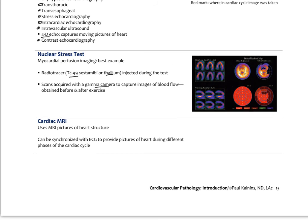Cardiac MRI takes MRI pictures of the heart structure. It's not as widely used and is more expensive, but emerging literature shows it's a very useful test, especially for cardiomyopathies. The cardiac MRI can be synchronized with the ECG so we can see exactly where in the cardiac cycle different pictures are being taken, helpful for looking at chamber abnormalities. Of the three imaging tests — echocardiogram, nuclear stress test, and cardiac MRI — the echo is by far the most widely used.